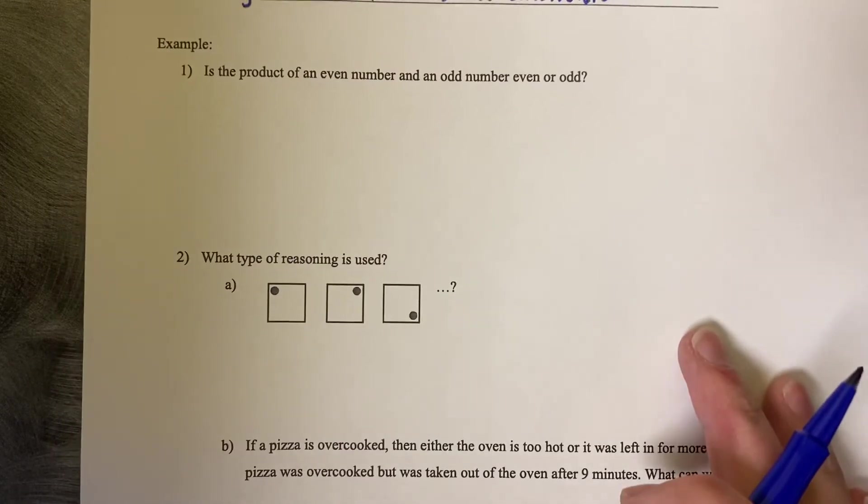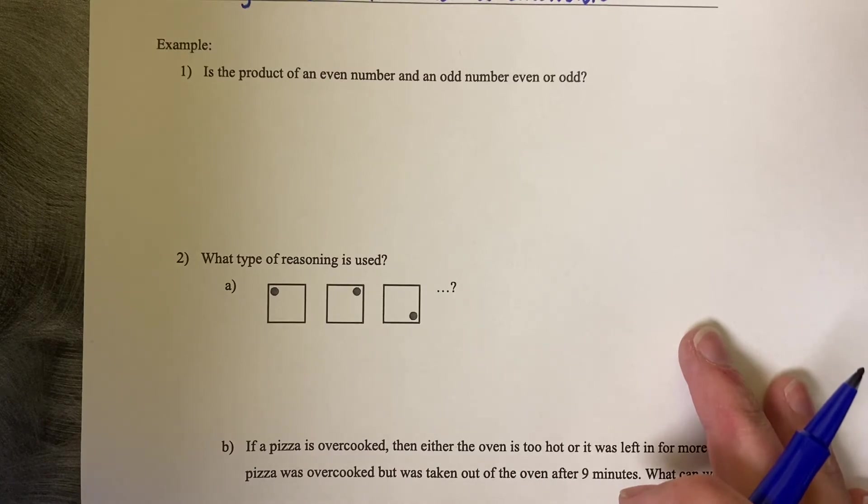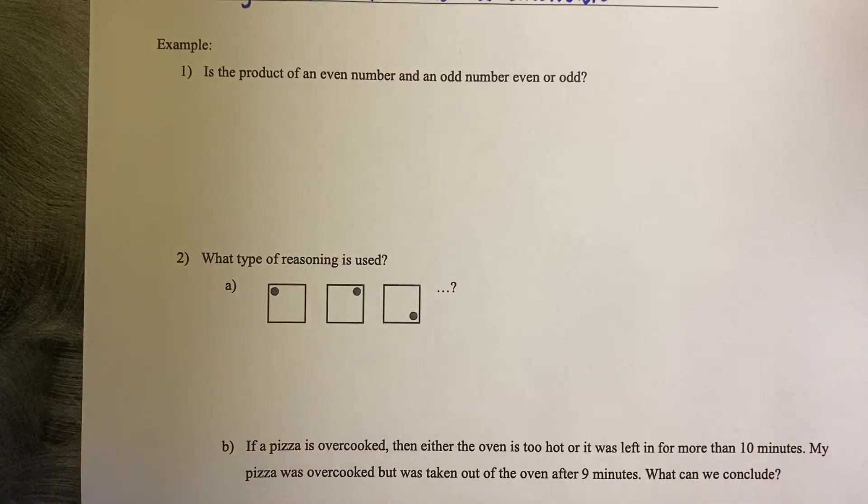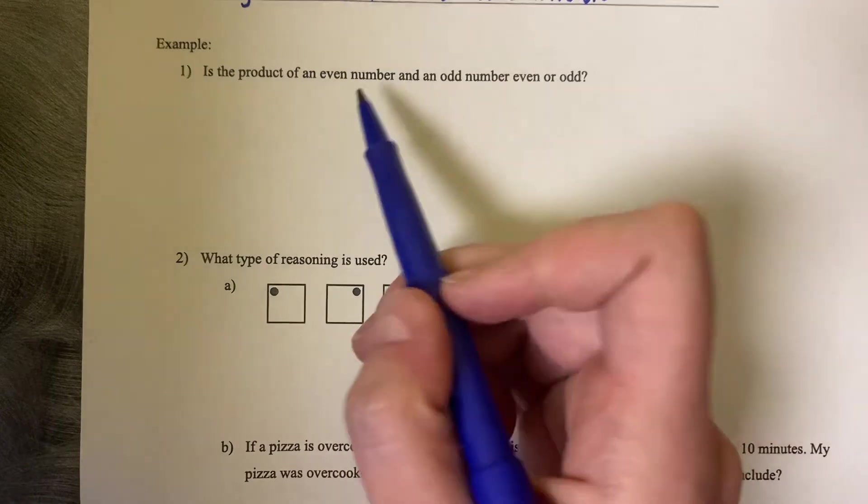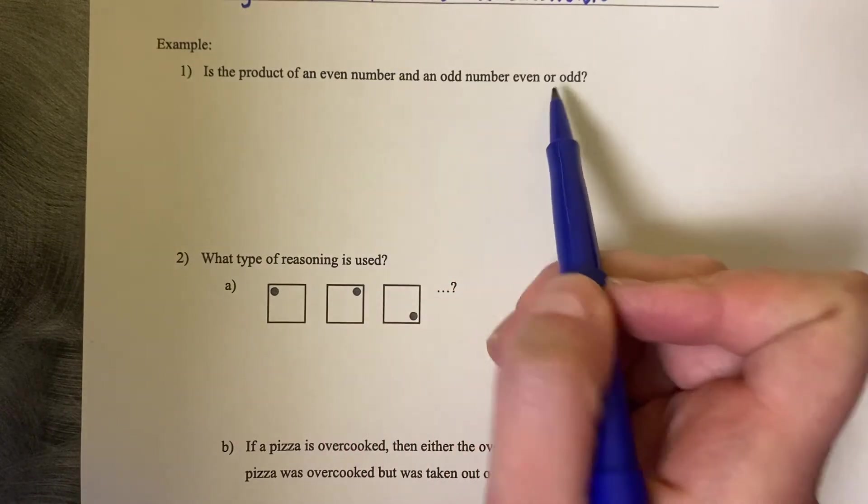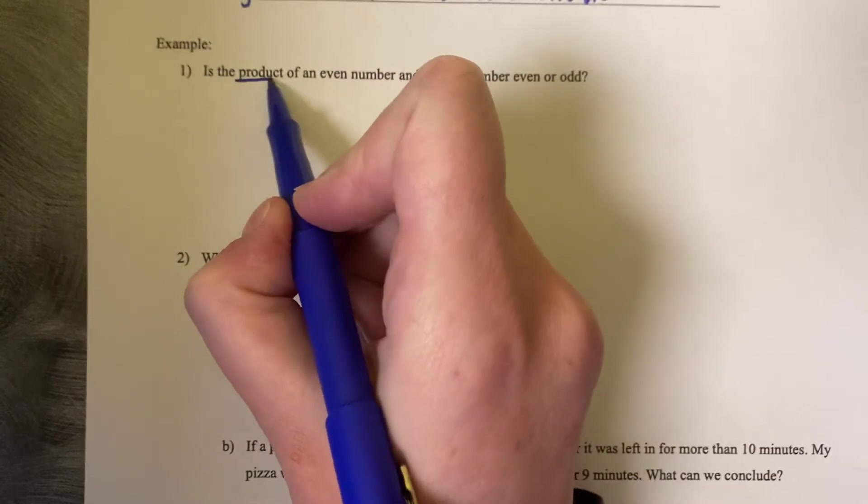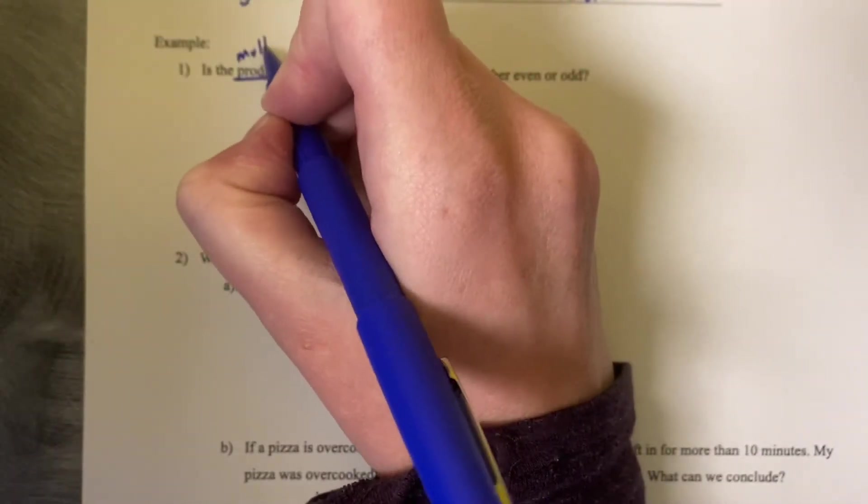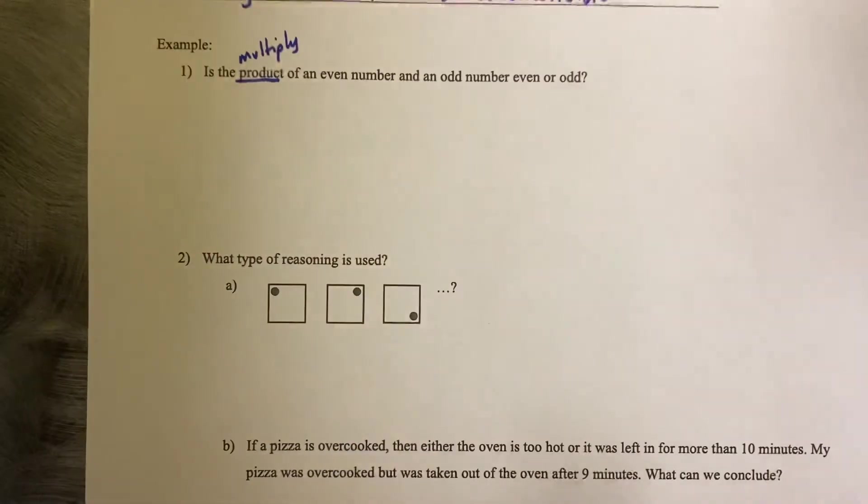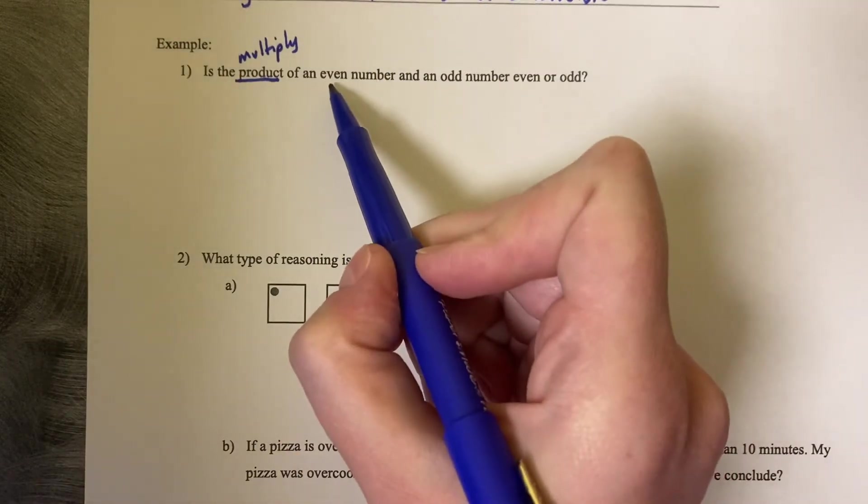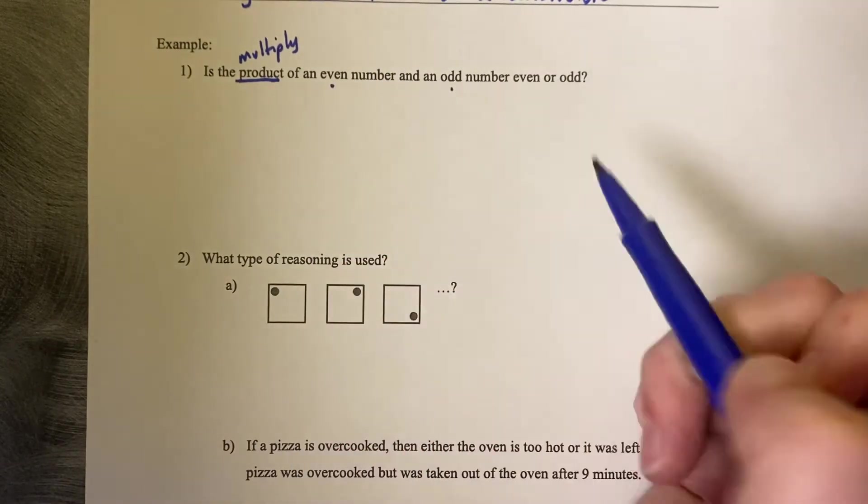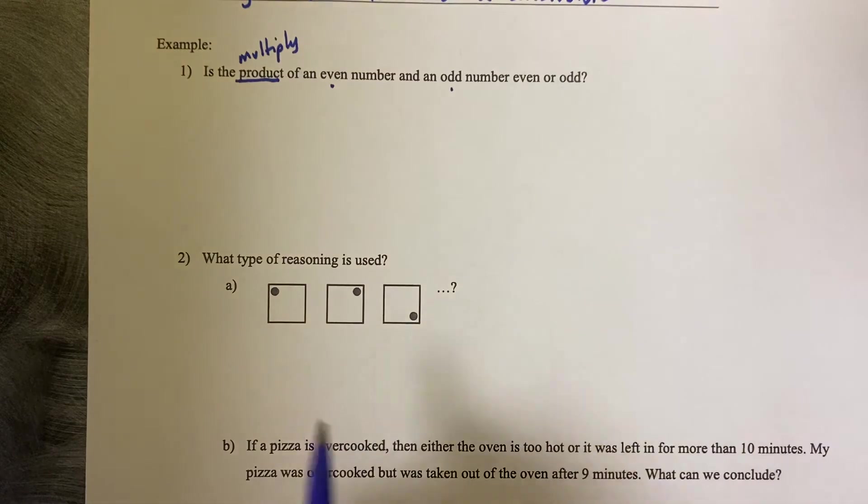Here's an example. We're not going to do a full proof for this. We're just going to talk about it. So is the product of an even number and an odd number even or odd? So let's break this down a little bit. The product means multiply. So if I multiply together an even number and an odd number, will the answer be even or odd?